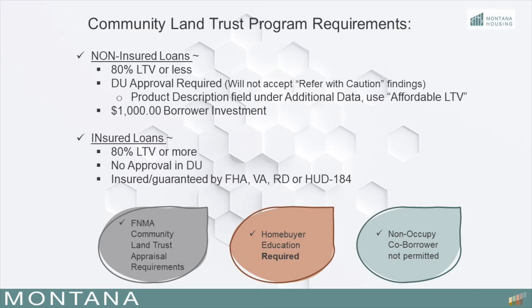All properties must be appraised according to Fannie Mae Community Land Trust's appraisal requirements by an appraiser who is knowledgeable and experienced in the appraisal techniques, namely the direct capitalization and the market deviation of capitalization rates that are necessary to appraise a property subject to a leasehold estate held by a Community Land Trust. All borrowers must complete homebuyer education and consent to early default counseling. Montana Housing partners with NeighborWorks Montana and a network of nonprofit, governmental, and private sector agencies that specialize in first-time homebuyer services and loan products.